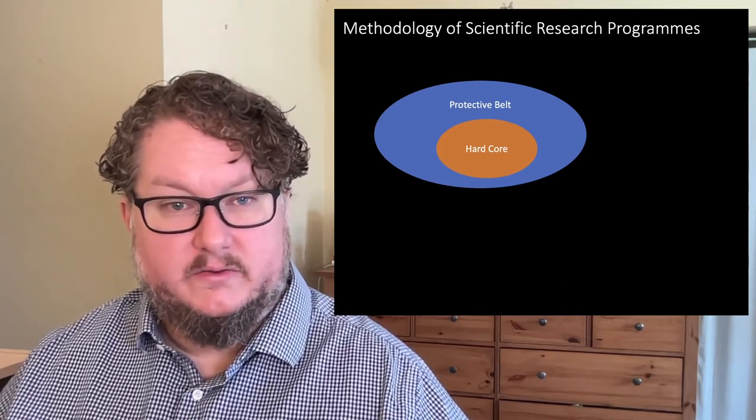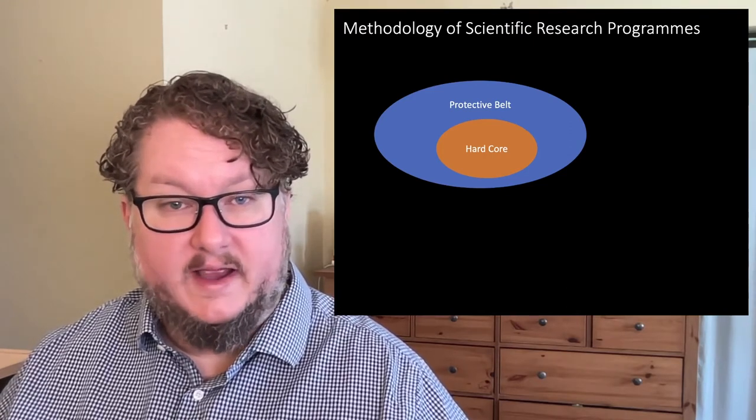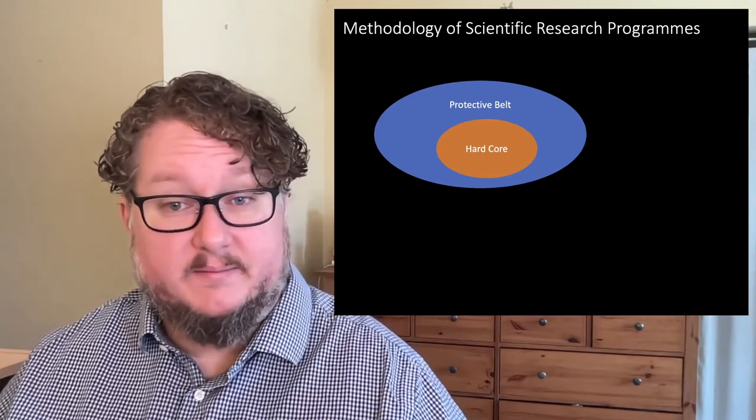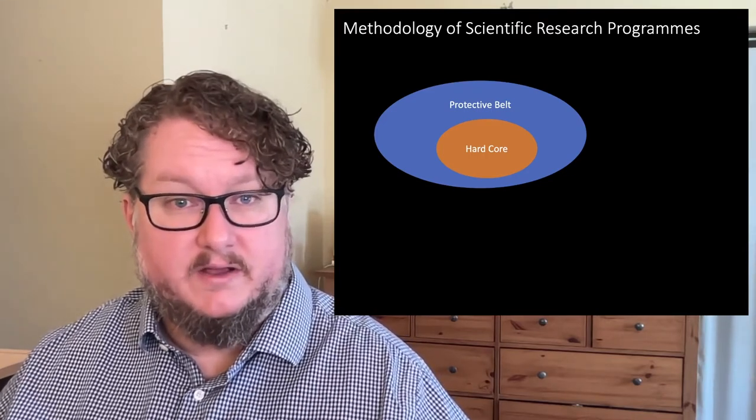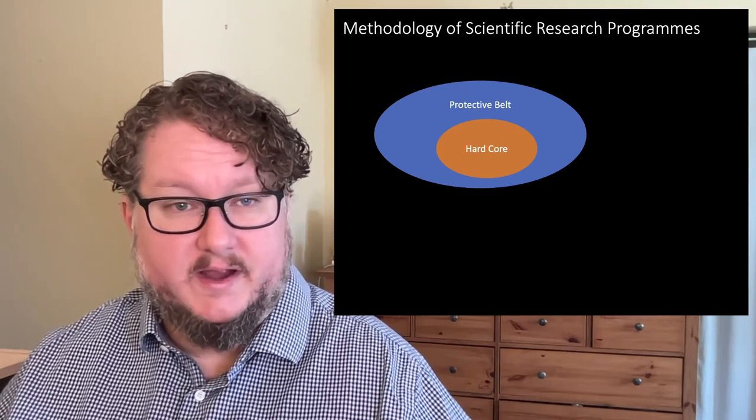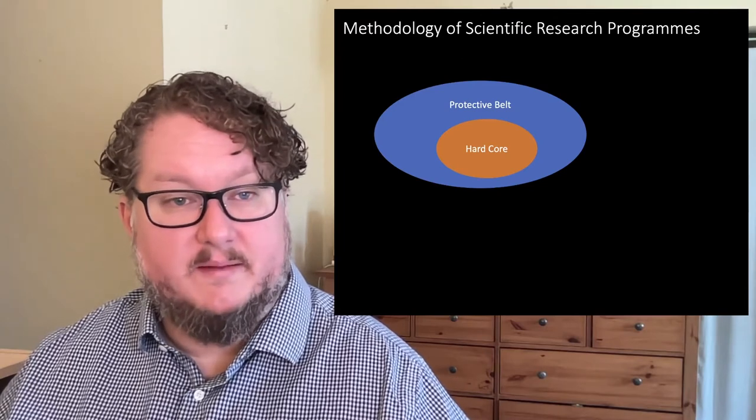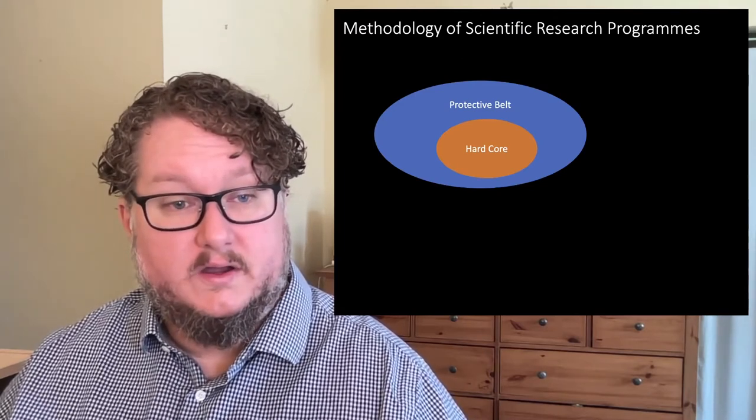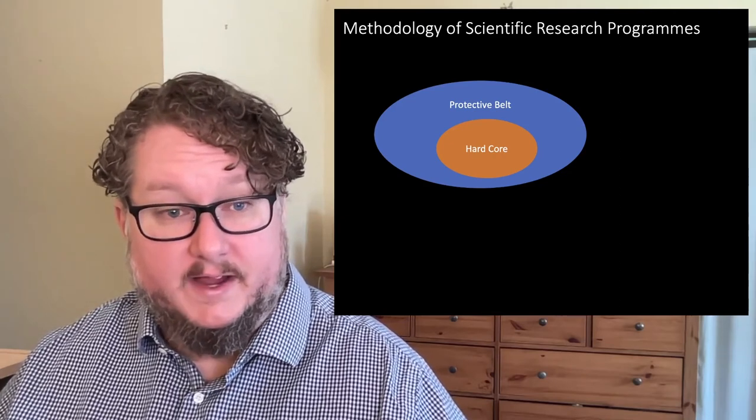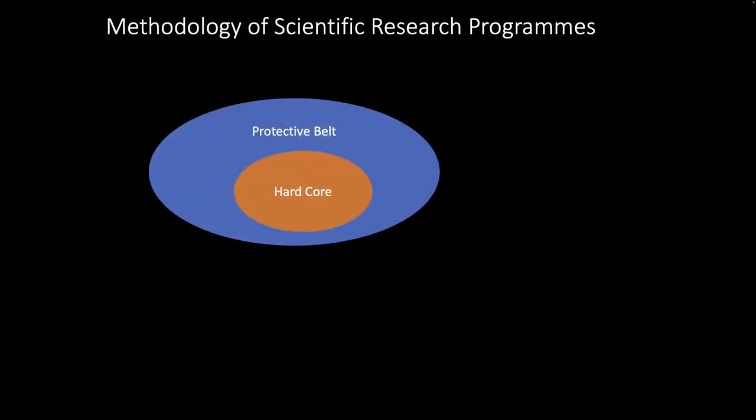So it's important to think of this as a kind of modification of falsificationism. According to Lakatos, the right unit of analysis for thinking about science is not the theory, but what he calls a research program. And a research program, kind of like a paradigm, has a kind of central set of commitments. Lakatos called this the hard core of the research program. And it had what Lakatos called a protective belt, a set of less central assumptions, less central commitments that could be modified over time.